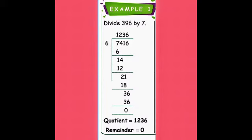In 21, how many 6s? Three — 3 × 6 = 18. Balance: 21 − 18 = 3. Take down the 6. In 36, how many 6s? Six — 6 × 6 = 36. Subtracting gives 0 as remainder. So quotient = 1236 and remainder = 0.